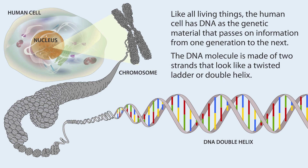Like all living things, the human cell has DNA as the genetic material that passes on information from one generation to the next. The DNA molecule is made up of two strands that look like a twisted ladder or double helix.